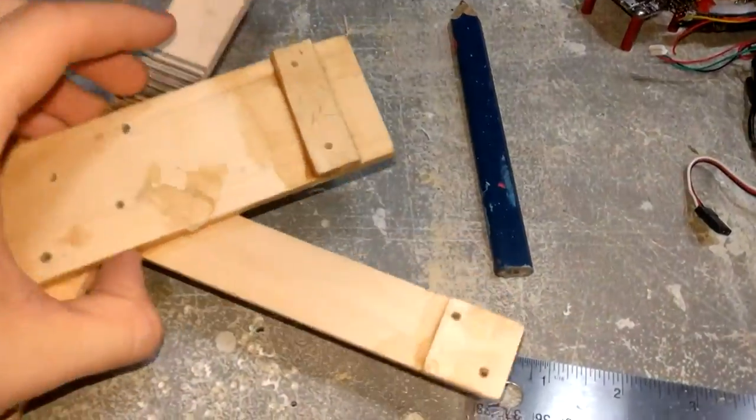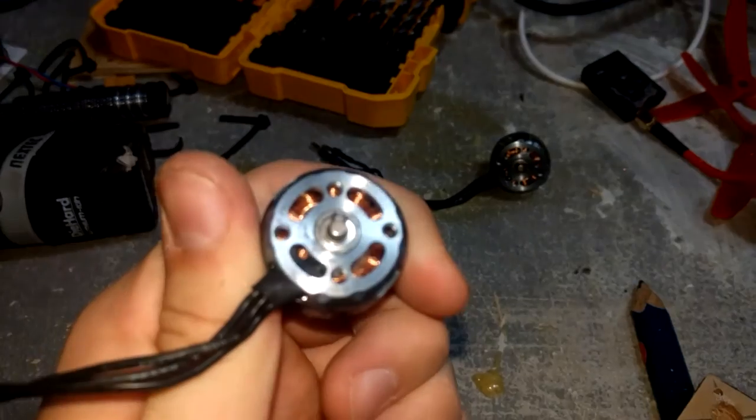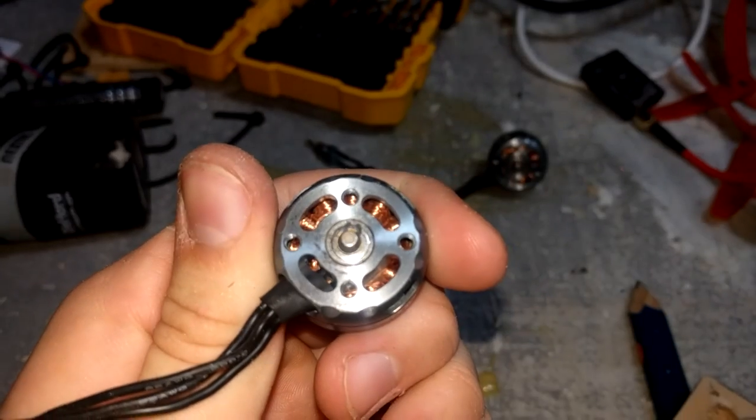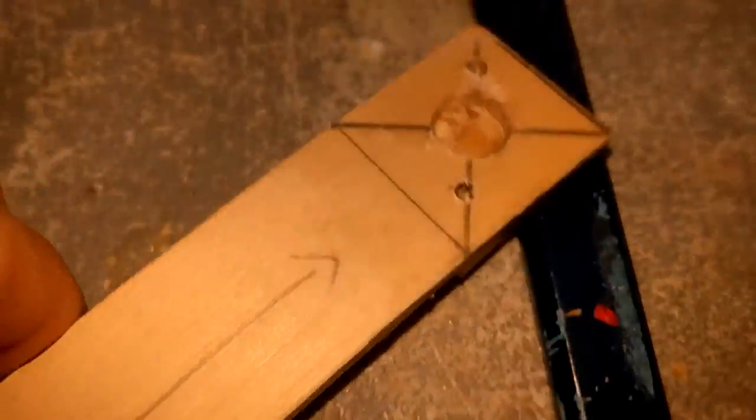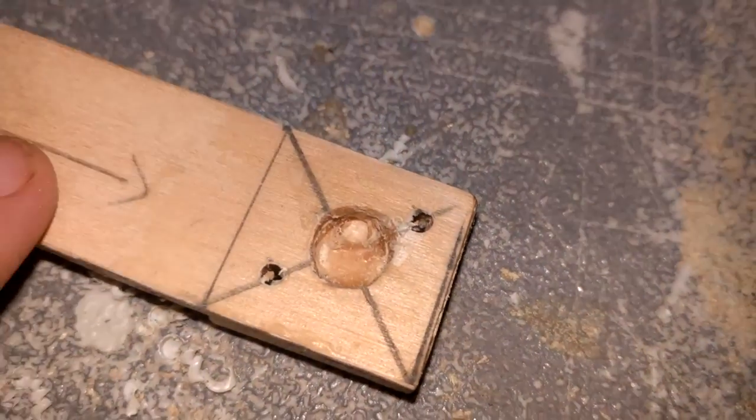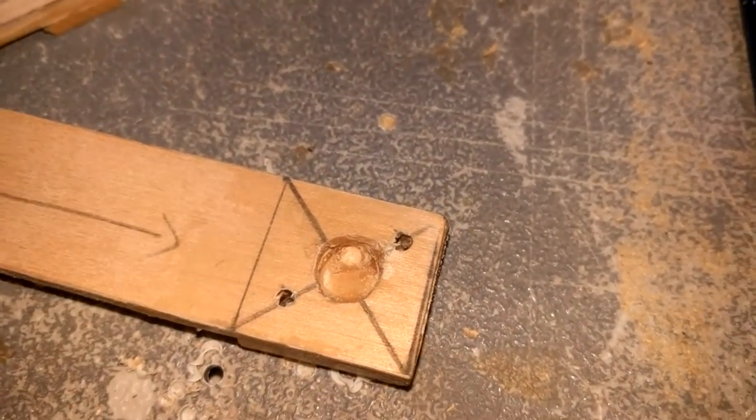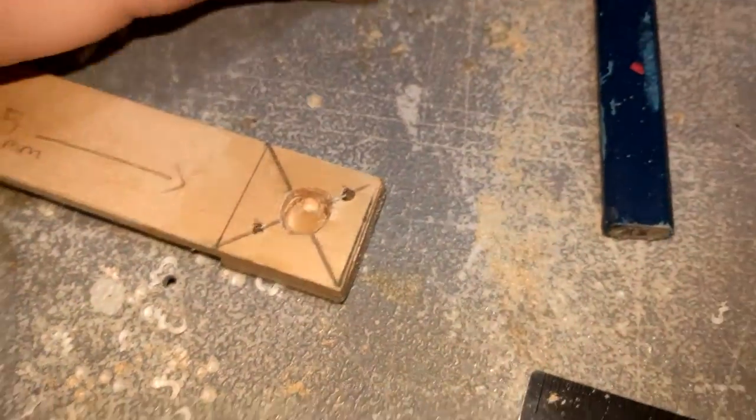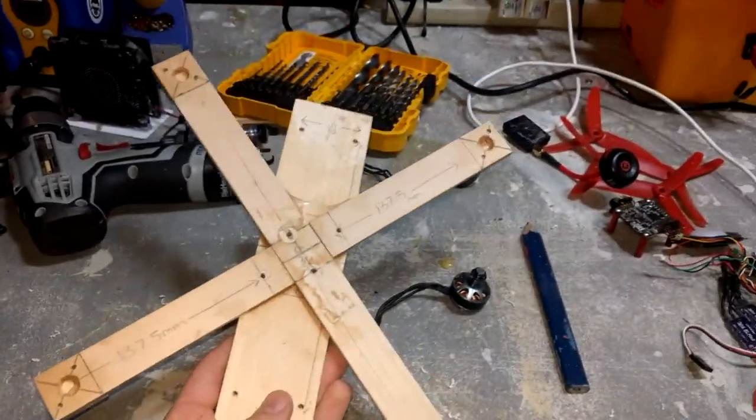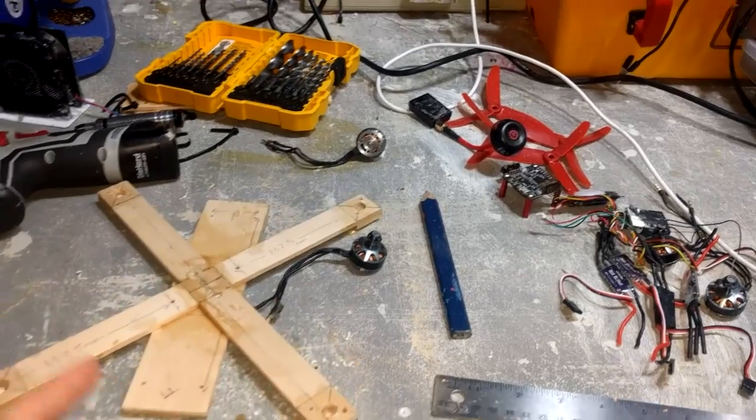I just drilled the holes where the motor screws will mount on the arms. These Lumenier motors have four bolt holes, and the longer spacing is three-quarters of an inch across. I went with two screws because I used two on my last quad and it worked fine. That lines up pretty good. Next, I'm going to paint this black, just like the other one, then we can start putting the electronics on.